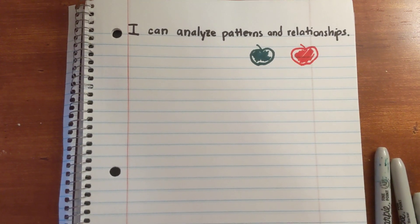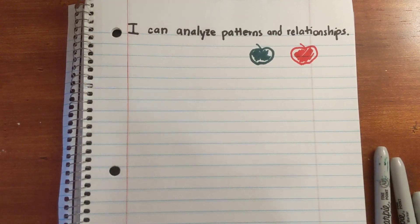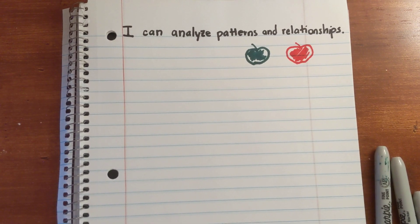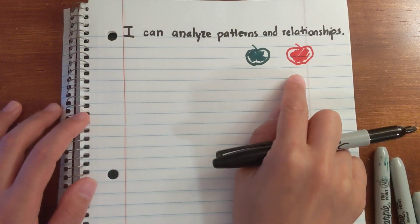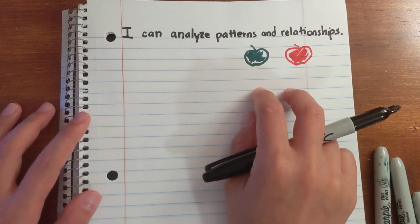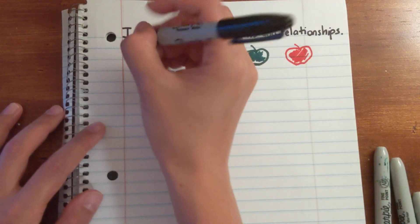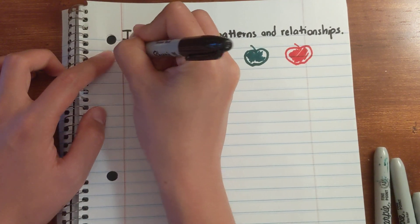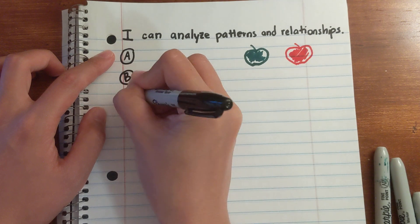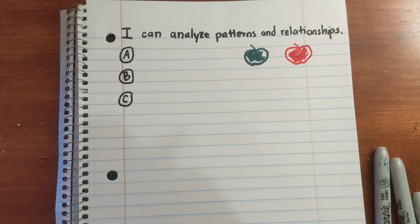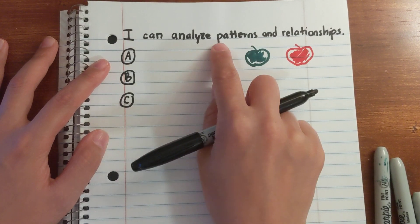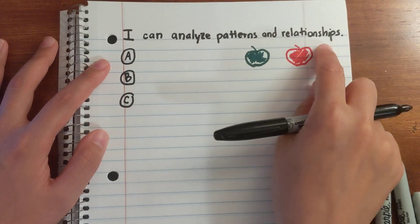The ICAN for today is: I can analyze patterns and relationships. I've already drawn two apples for us, and we're going to talk about how they work into our ICAN statement. The statement is a little longer than normal because there are three parts to it, so this video will be a little longer than normal.